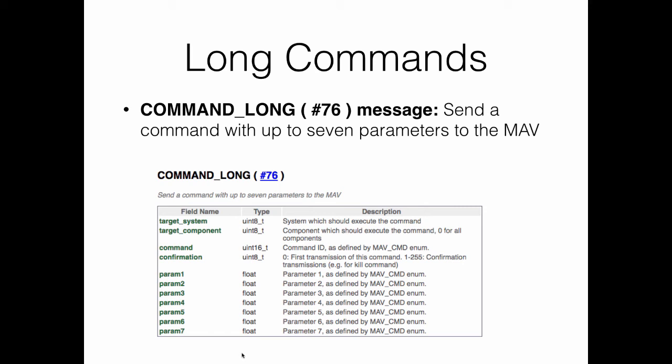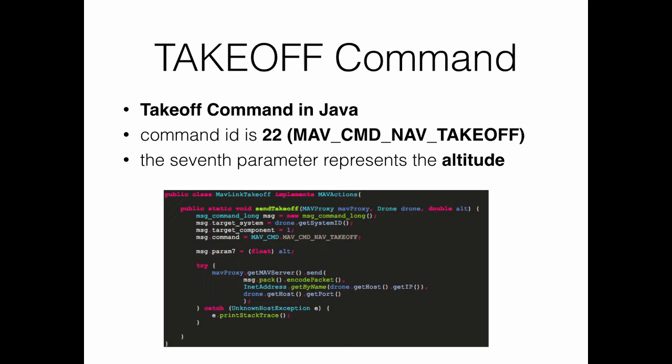The command field refers to the type of command, defined in the MAV_CMD enumeration. For example, command number 21 refers to a land command, command 22 refers to a takeoff command, and command 20 refers to return to launch. There are around 60 command types defined in the MAV_CMD enumeration. The confirmation field indicates if the message was sent for the first time (value 0), or represents a retransmission. The 7 parameters depend on the command type — for the land command all 7 parameters are unused, while for takeoff the 7th parameter represents the requested altitude.